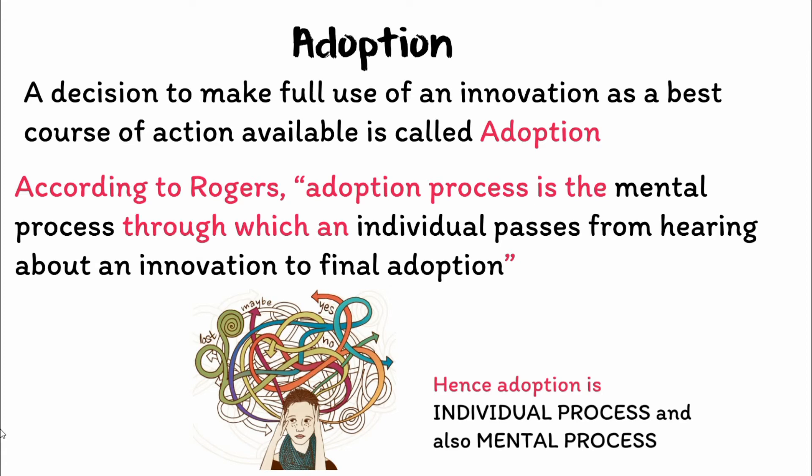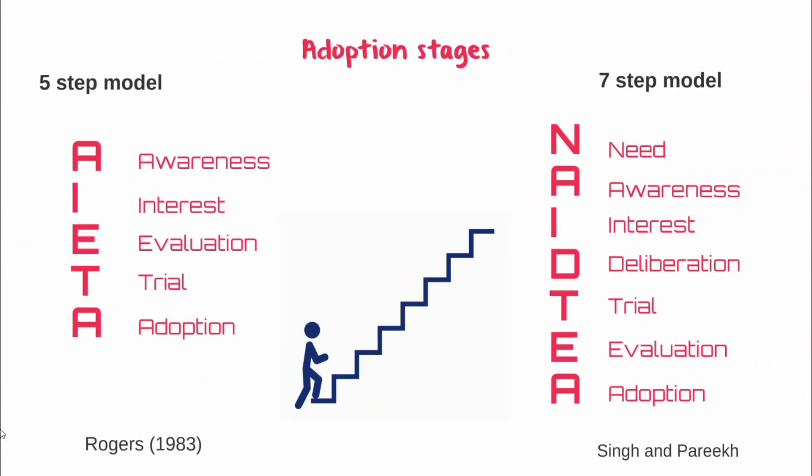According to Rogers, the adoption process is the mental process through which an individual passes from hearing about the innovation to final adoption. Rogers identifies adoption as occurring in five different stages. The first stage is the awareness stage, where the farmer just knows about the availability of an innovation. Then he enters the interest stage, where he requires additional information and attempts to get more and more information. Then he mentally evaluates the innovation in his condition and makes a trial at a smaller scale level. Finally, he adopts that particular innovation.